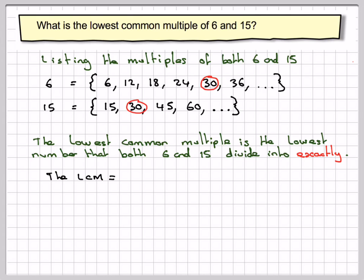So we'll put a circle around those and we'll write down that the answer is 30. So what we're saying here is that the lowest number that both 6 and 15 divide into exactly is 30.